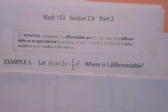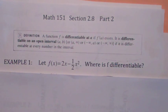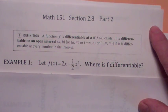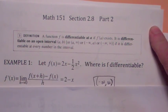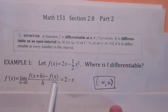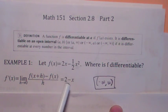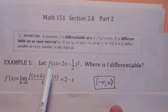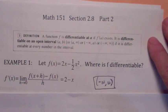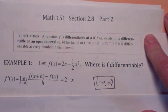Let's ask the question — this is a problem we looked at in part one of 2.8. Here's the function we looked at, and I'm asking where is f differentiable? The derivative turned out to be 2 minus x. You can see that this is defined for all x. So we say this polynomial function is differentiable on the entire real line, negative infinity to infinity. That's true with every polynomial function.